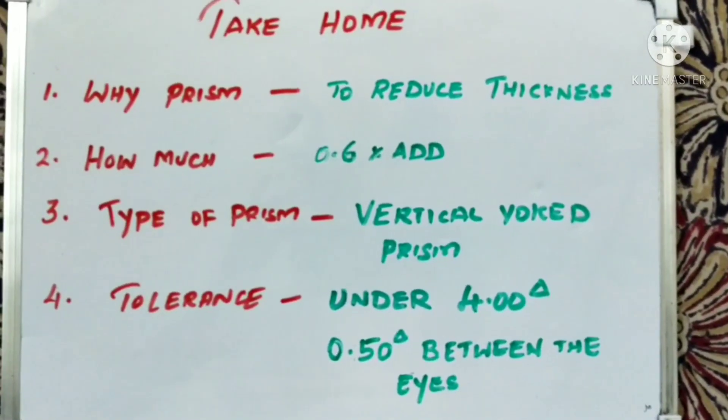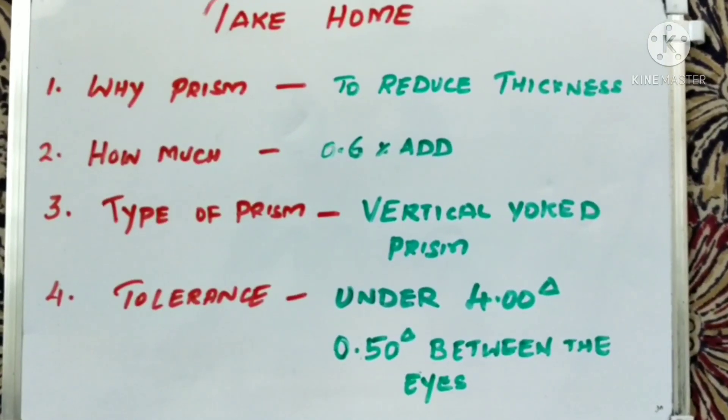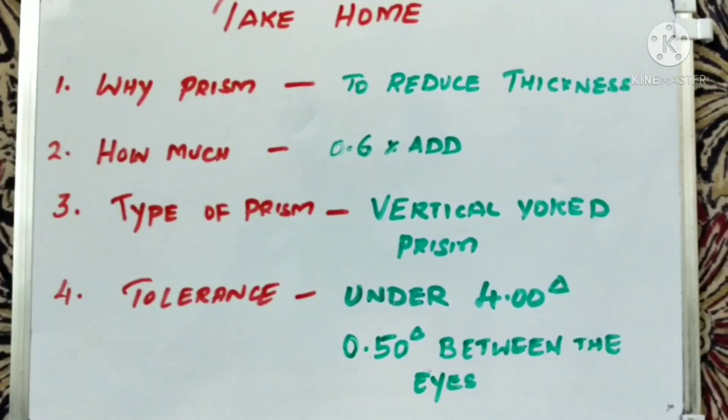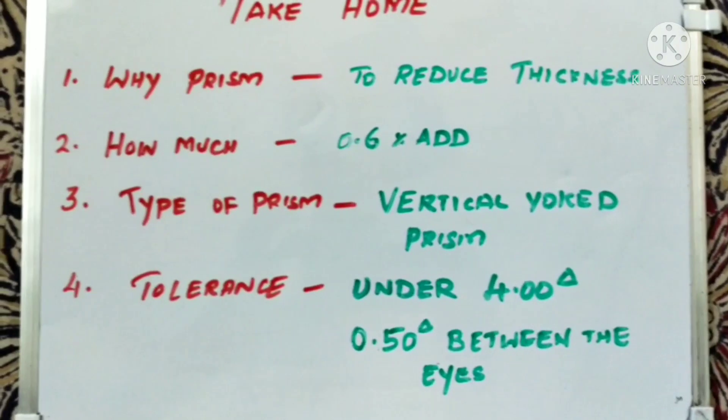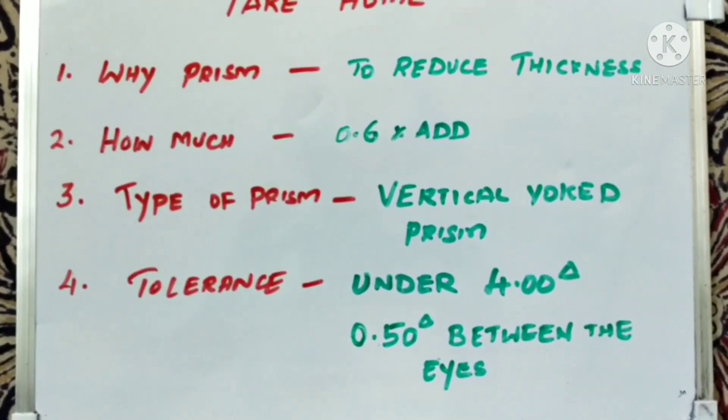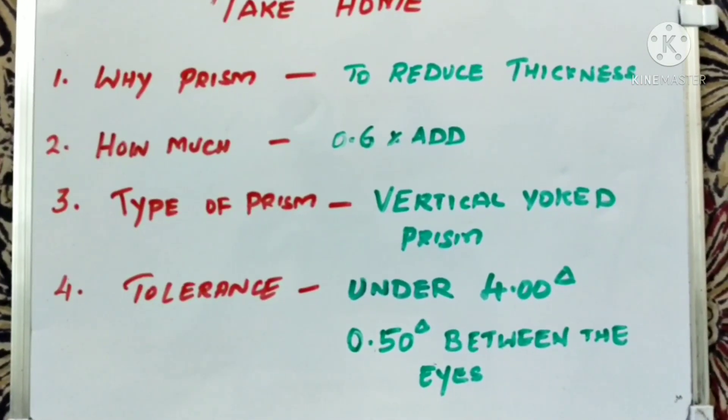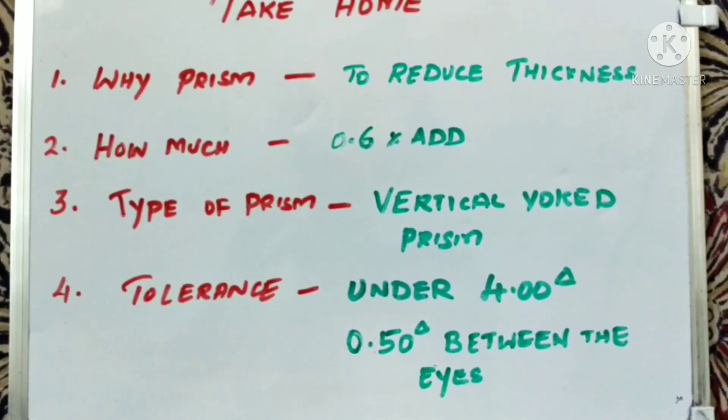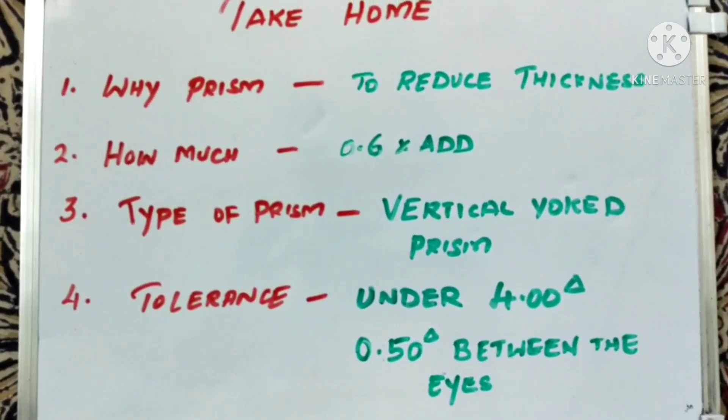To quickly conclude, the take home message for all of you: Why prism in progressive addition lens? Obviously it is to reduce the thickness. How much prism can be incorporated? It has to be 0.6 into add—modern manufacturers do auto calculation for this. Type of prism? Basically it is a vertical yoke prism which is grounded on a progressive lens. The tolerance should be under 4 diopters; between the two eyes it should be max 0.5 diopter of prism.